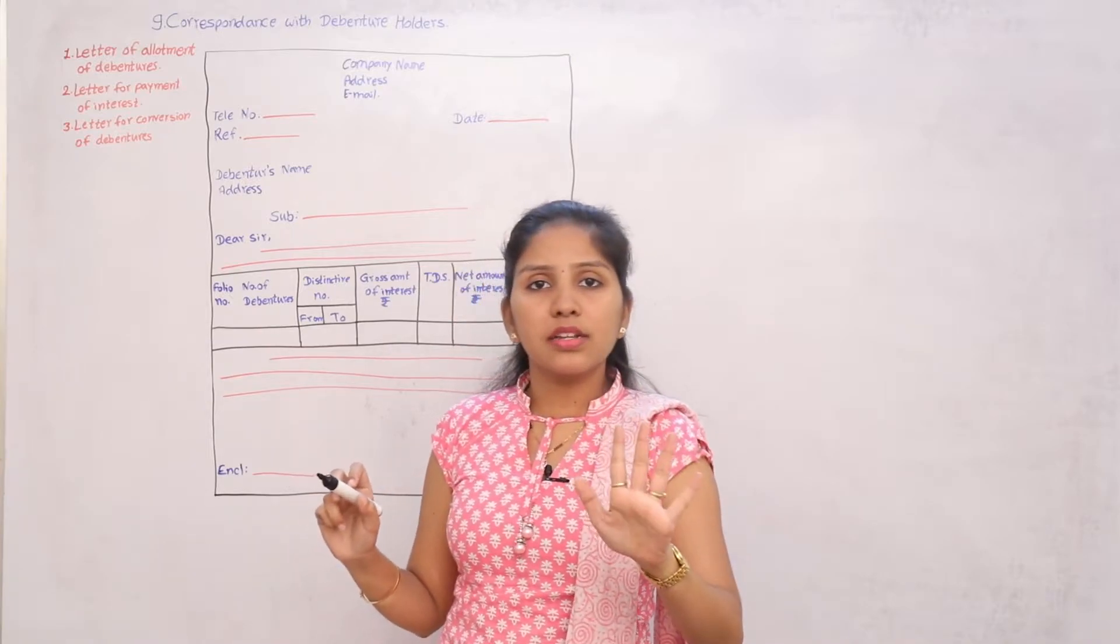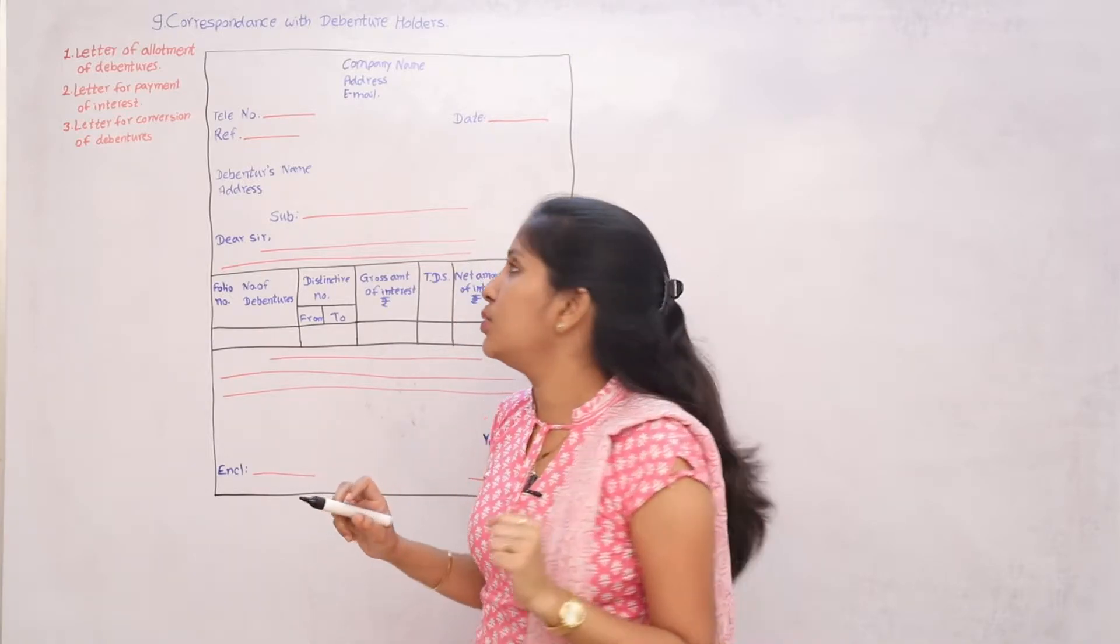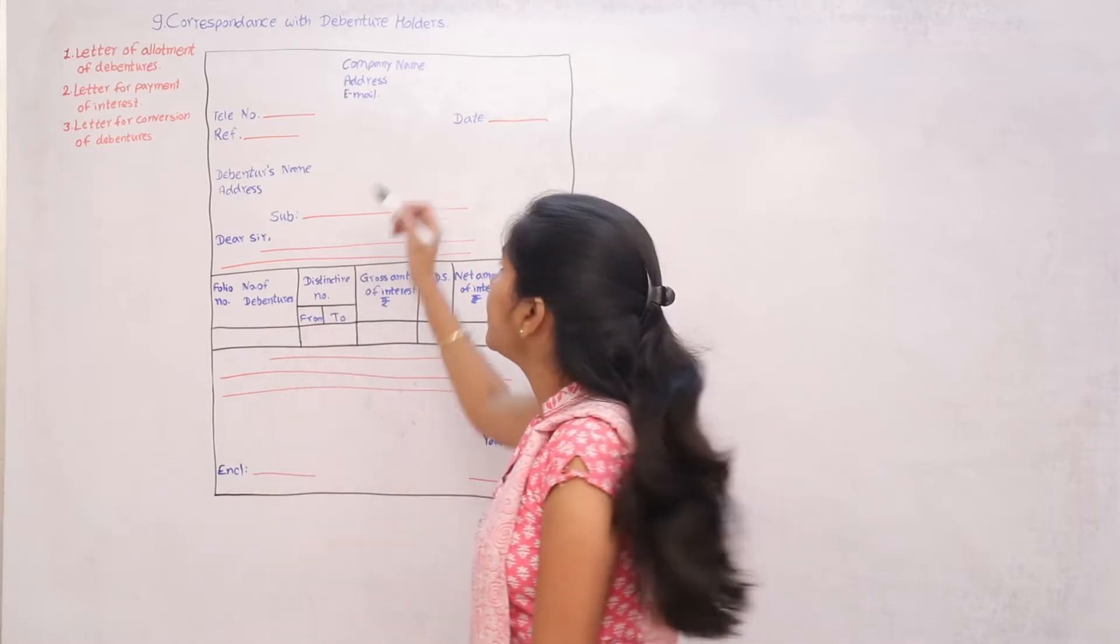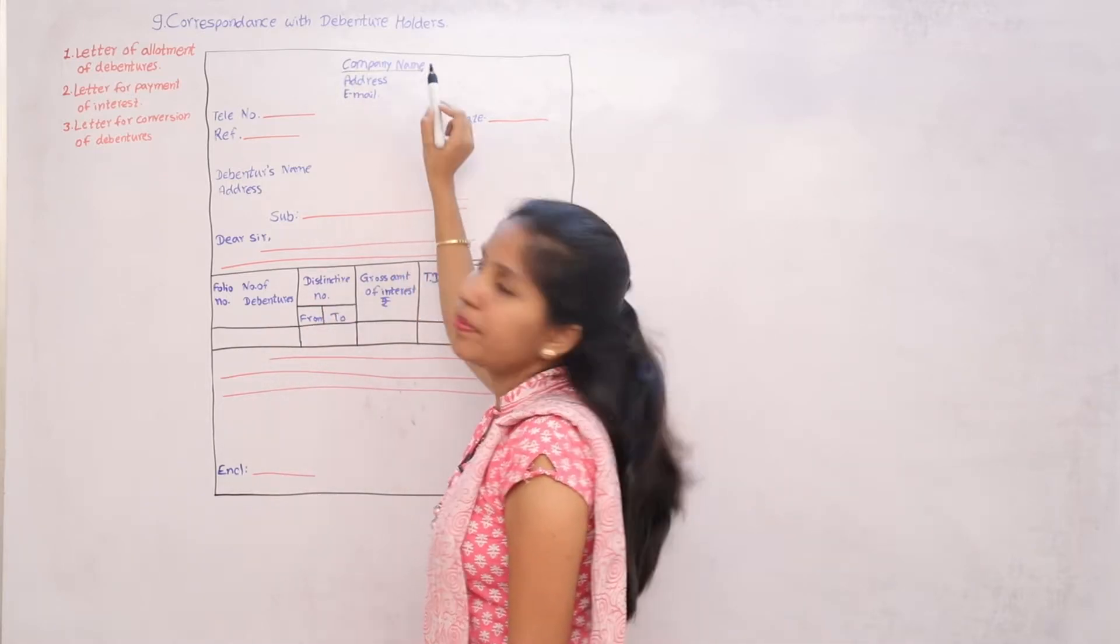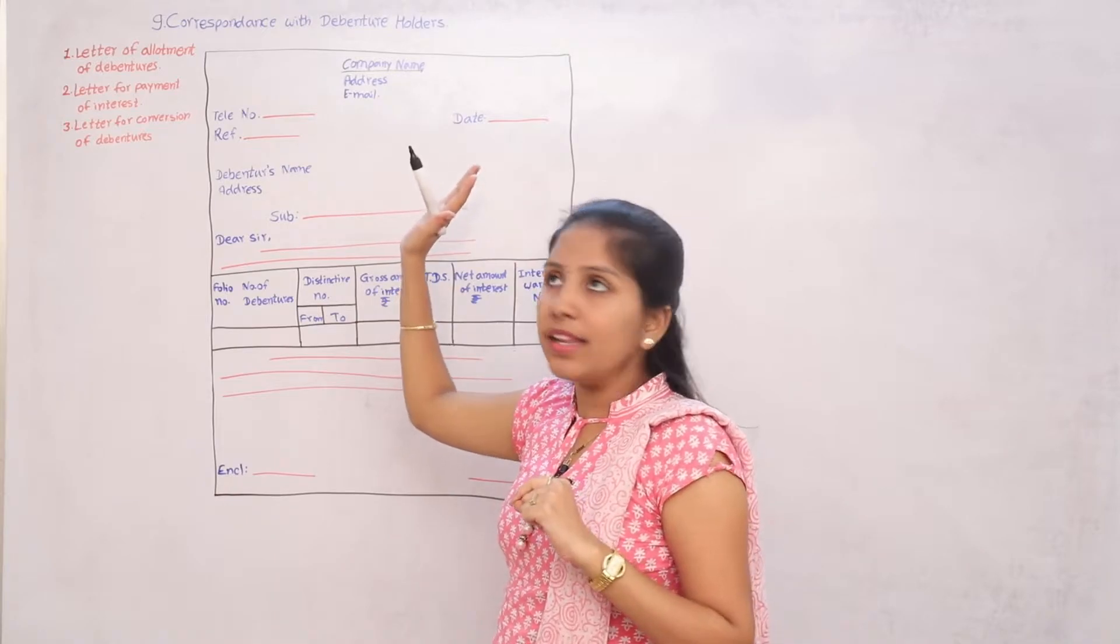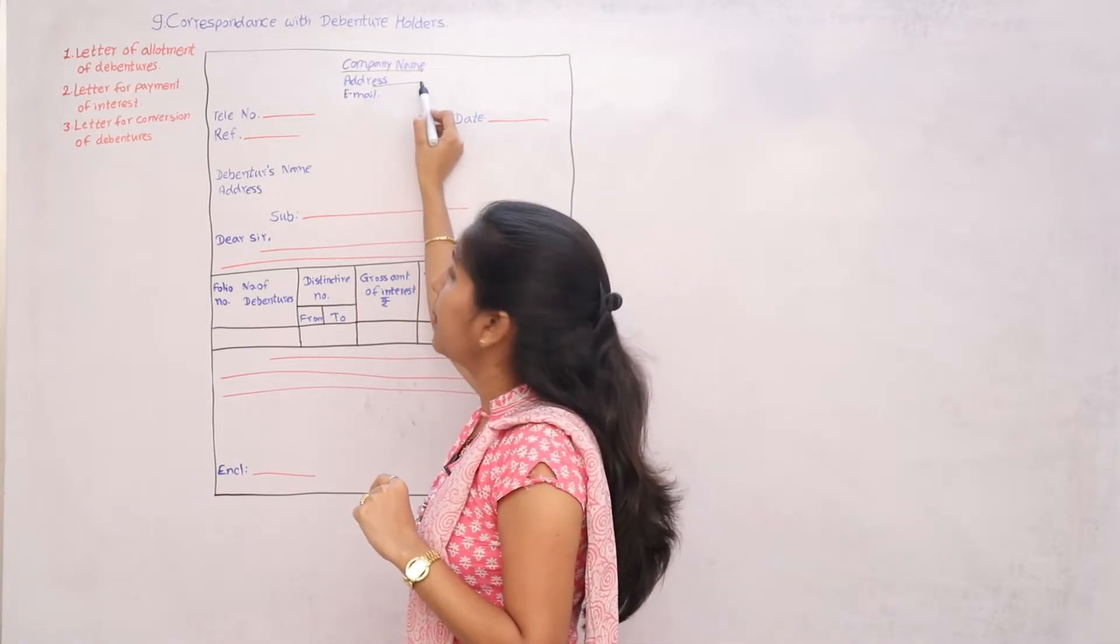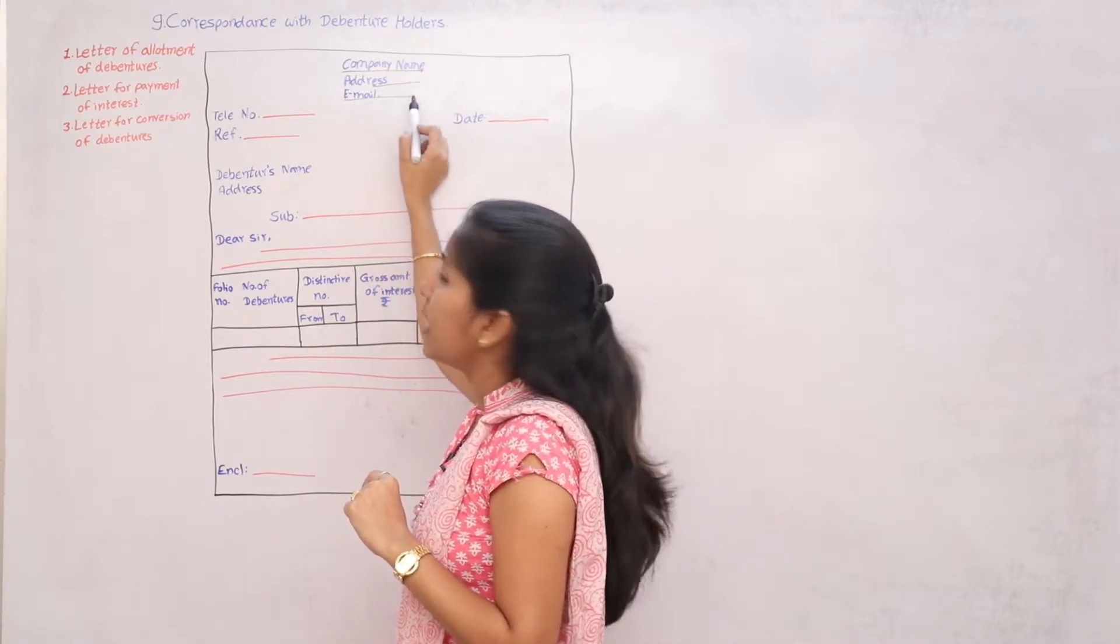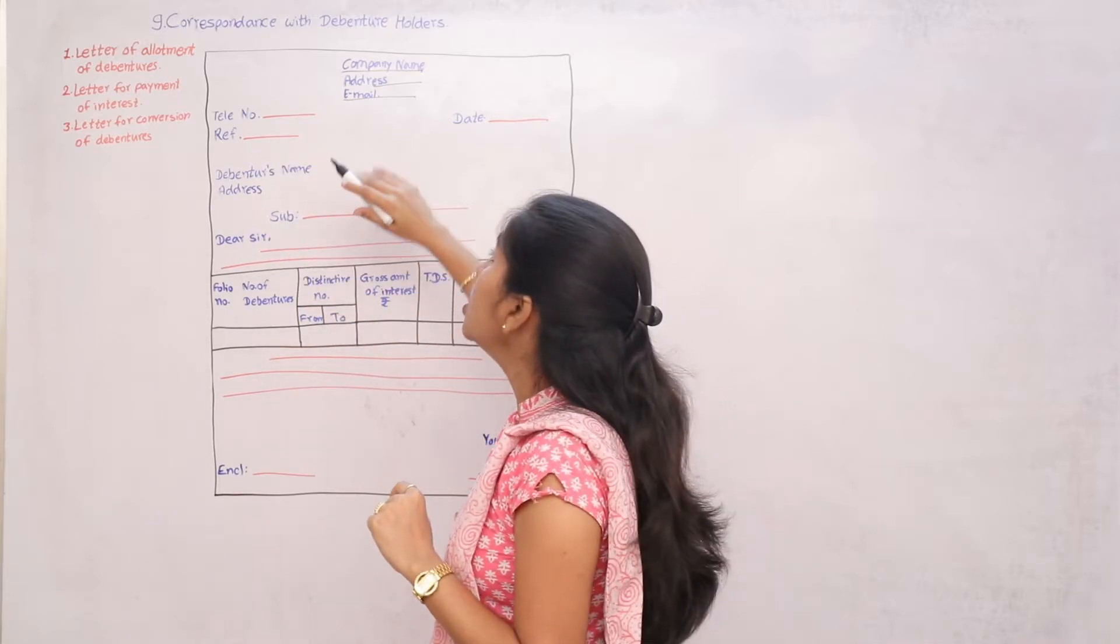I will give you the idea of the first one, you have to do it. First, in the middle of that letter, put the company name, then the company address and email address - these three things.